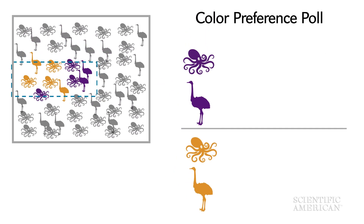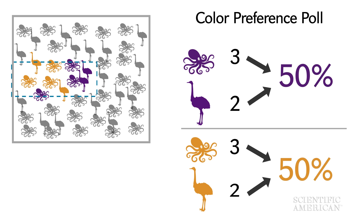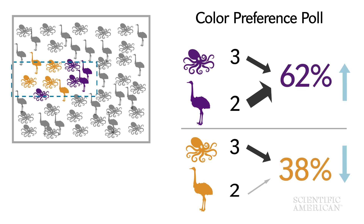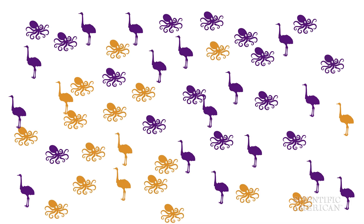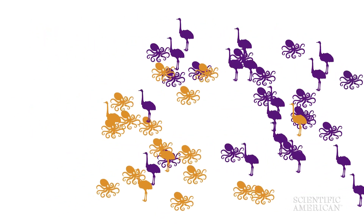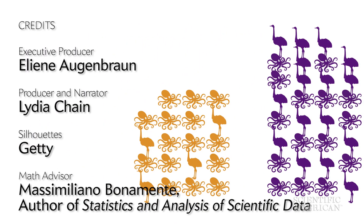Then, when we see an orange-preferring ostrich in our poll, we can weight it differently, claiming it doesn't represent a typical ostrich vote. Polls can try to ferret out how a population thinks and might act, but the best way to learn these animals' preference is still to have them vote. For Scientific American, I'm Lydia Chain.